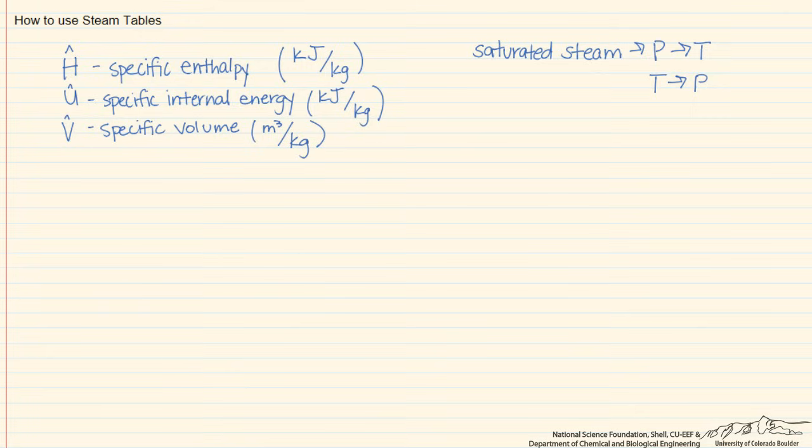The third one that we're going to look at is superheated steam, and superheated steam, you're going to need both the pressure and the temperature to find your properties, because you are beyond the vapor-liquid equilibrium line.